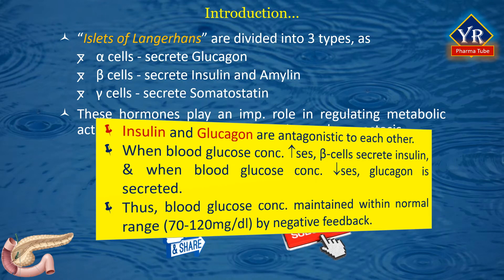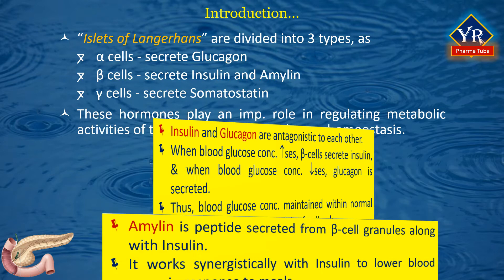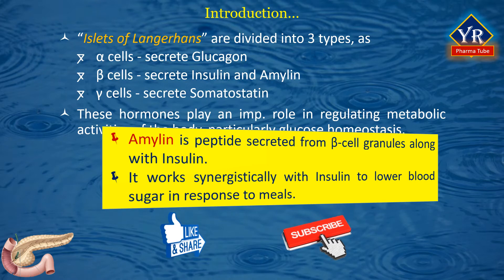Insulin and glucagon are antagonistic to each other. When blood glucose concentration increases, the beta cells secrete insulin, and when blood glucose concentration falls below the normal range, glucagon is secreted. Thus blood glucose concentration is maintained within the normal range of 70 to 120 mg per dl by negative feedback. Amylin is a peptide secreted from the beta cell granules along with insulin, and it works synergistically with insulin to lower blood glucose in response to meals.